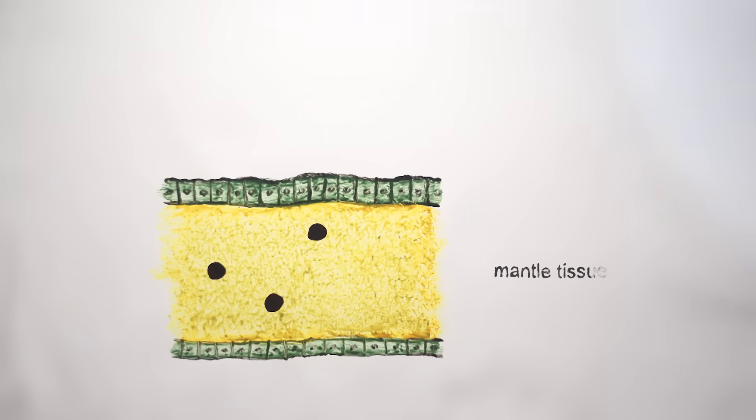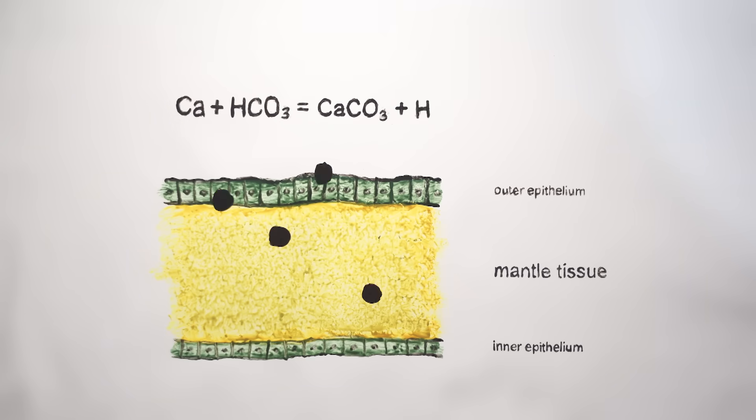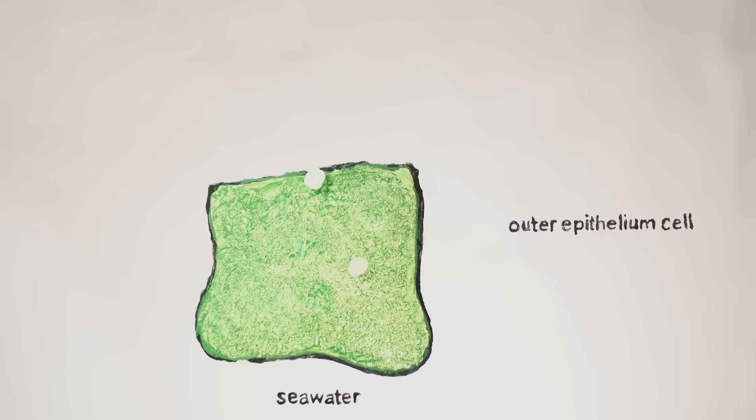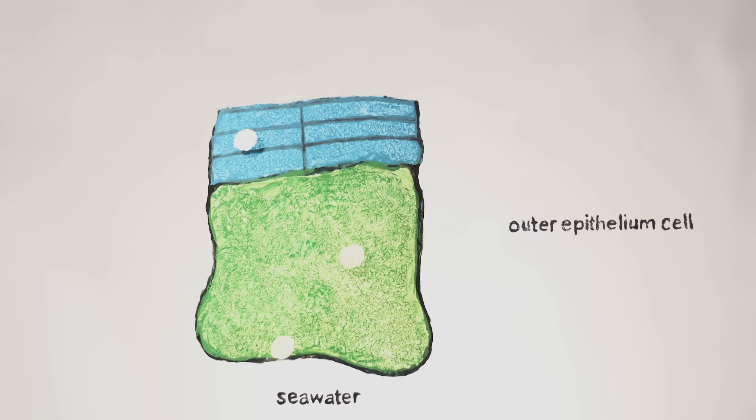Then the oyster filters the seawater, drawing out calcium and carbonate to combine them into its building material. It lays this material over the scaffold, which is covered in charged proteins that attract and guide the calcium carbonate molecules into layers.